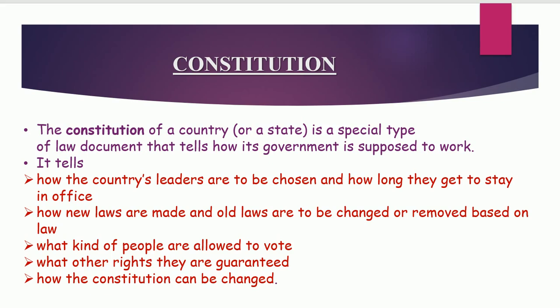What kind of people are allowed to vote? There are certain categories who are allowed to vote and certain categories who are not allowed to vote - these things have already been written in the constitution. The next one: what are the rights that have been guaranteed to the citizens of a country through the constitution? And how the constitution can be changed - everything is written in the constitution.